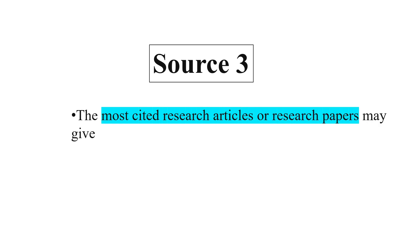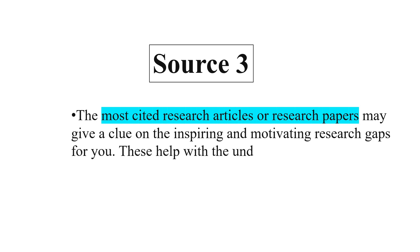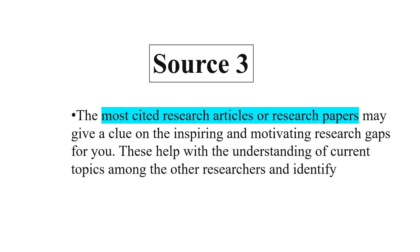Source number three is the most cited research articles or research papers. They may give a clue on inspiring and motivating research gaps. These help with understanding the current topics among researchers and identifying gaps in the research work. You can search Google or academic databases for the most cited research articles to help identify a perfect research gap for your topic.